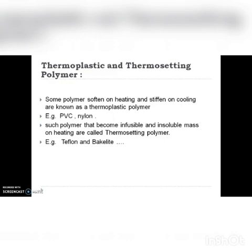The third class is thermoplastic and thermosetting polymers. Polymers that soften on heating and stiffen on cooling are known as thermoplastic polymers. Examples are polyvinyl chloride and nylon. Thermosetting polymers are those which become infusible and insoluble mass on heating. Teflon and Bakelite are examples of thermosetting polymers.